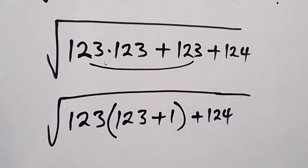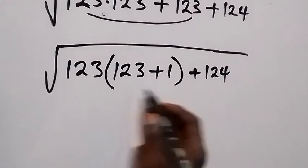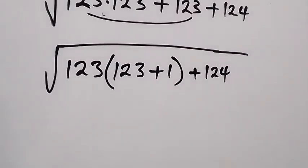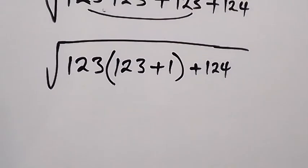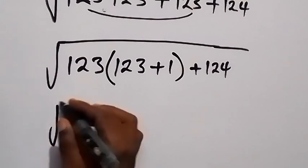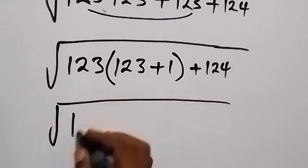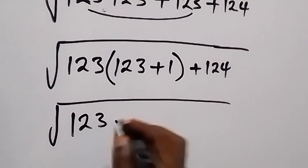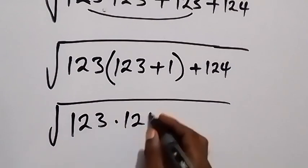Then, 123 plus 1 is 124. So we can write this as square root of 123 multiplied by 124.